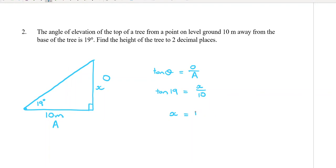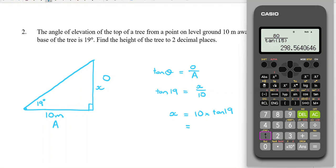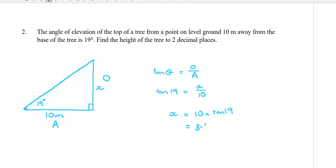So it should have been 10 times tan 19, and then we can type it in. To two decimal places this one says, so 3.44 meters would be how tall the tree is.